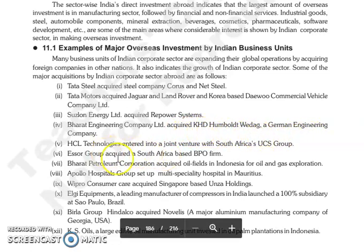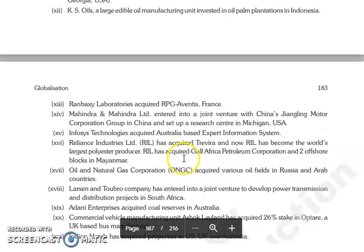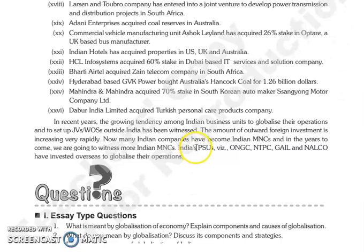HCL Technologies developed a joint venture with South Africa's UCS Group and CR Group. The South Africa-based BPO CMS and BHCO Legal Petroleum Corporation developed operations for oil and gas exploration. There are many more examples of Indian companies investing overseas. In recent years, there is a growing tendency among Indian business units to globalize their operations, setting up joint ventures and wholly owned subsidiaries outside India, with the amount of foreign investment increasing rapidly.